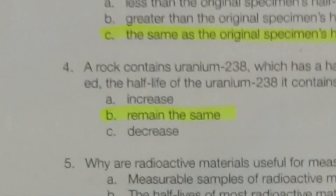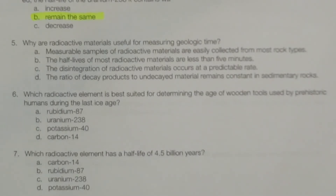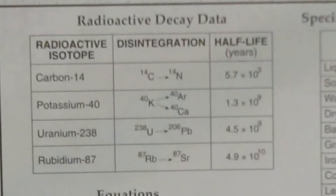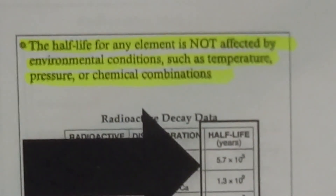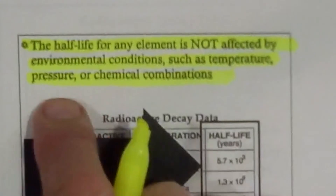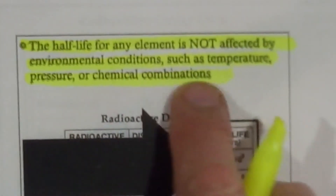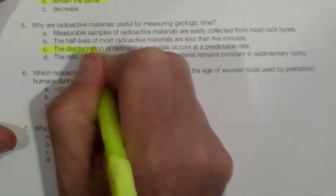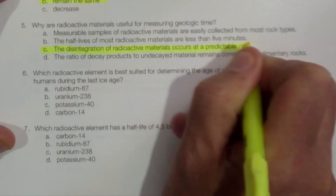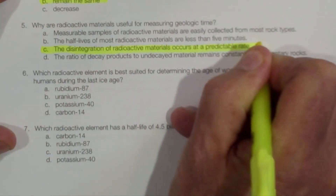Number five: why are radioactive materials useful for measuring geological time? Since each one of these isotopes decays at a specific rate, regardless of conditions like temperature, pressure, or chemical combinations, or even the amount, the disintegration of radioactive materials occurs at a predictable rate.